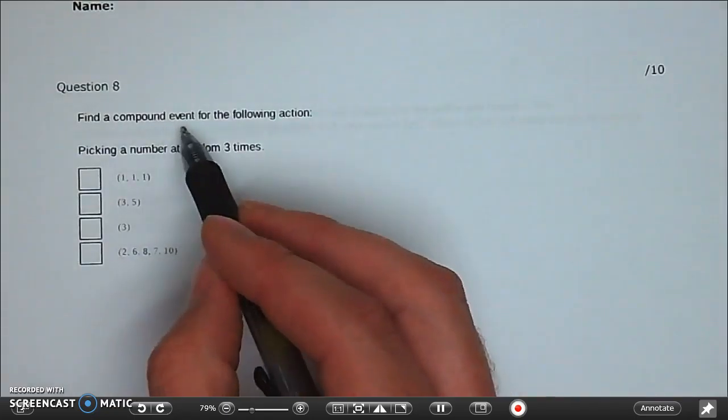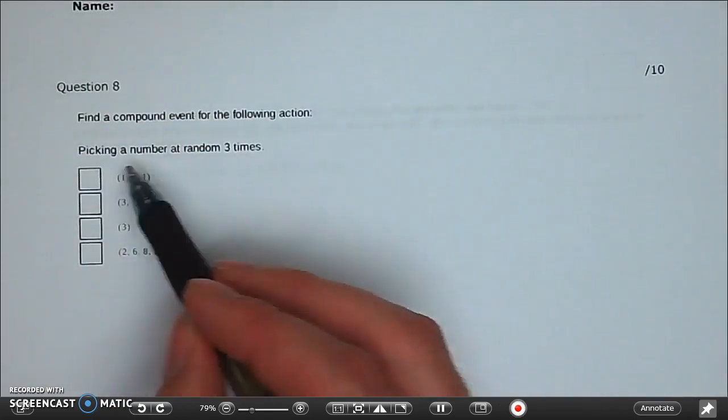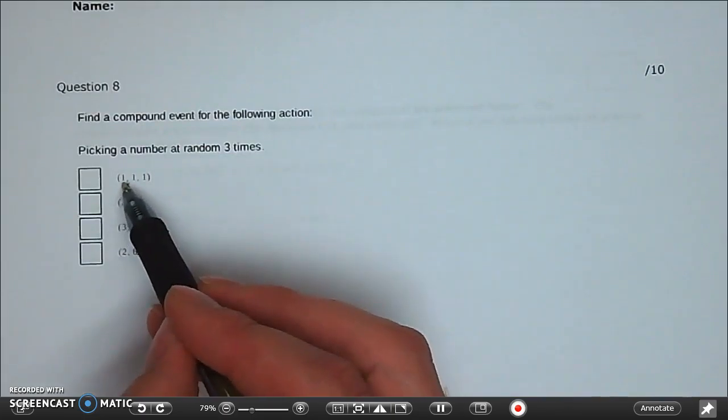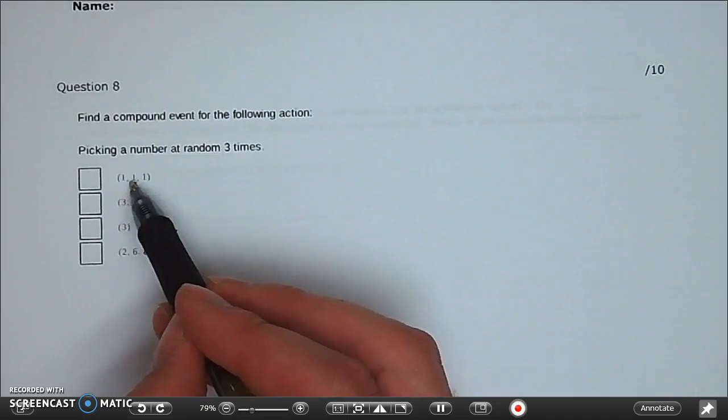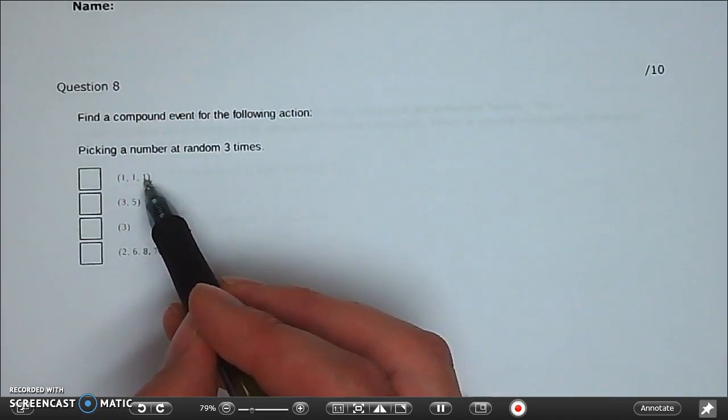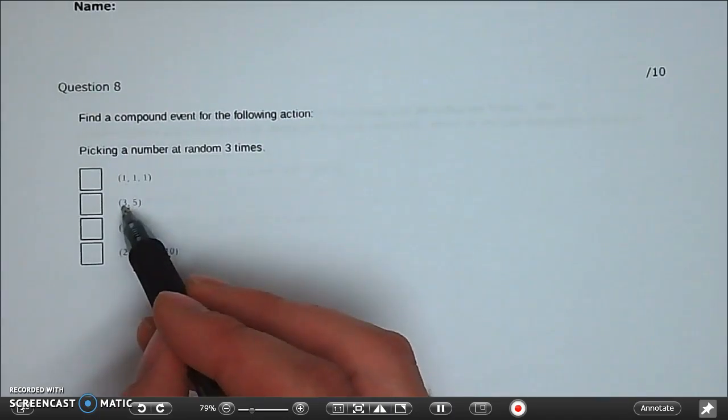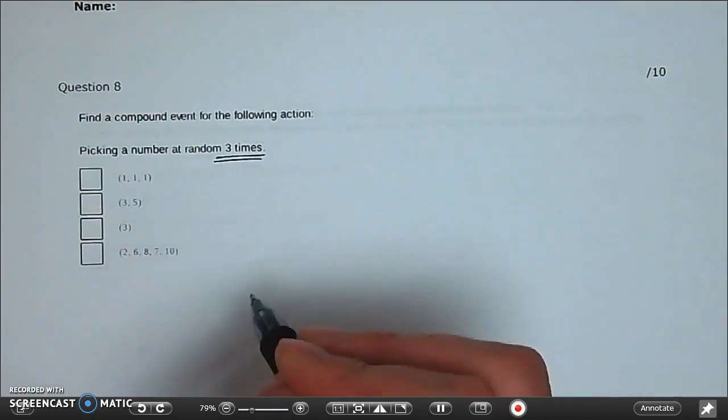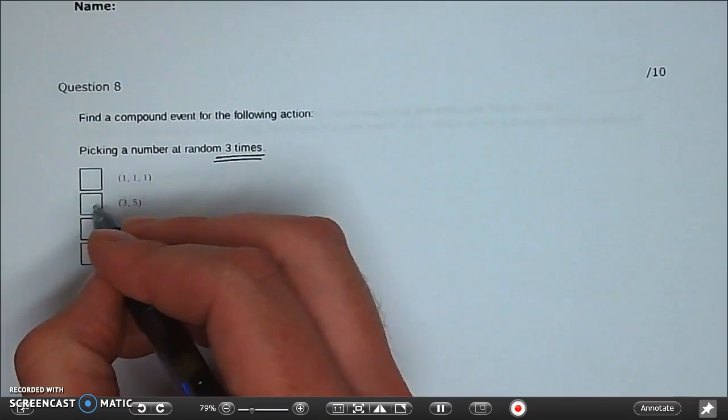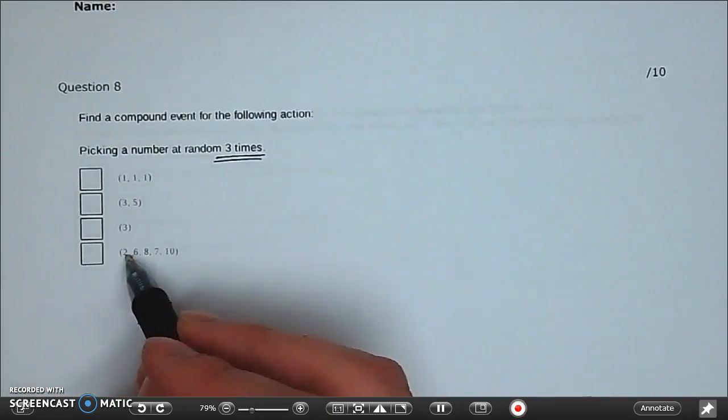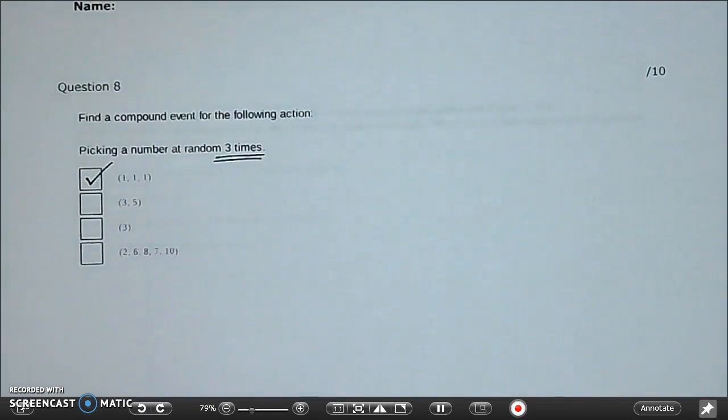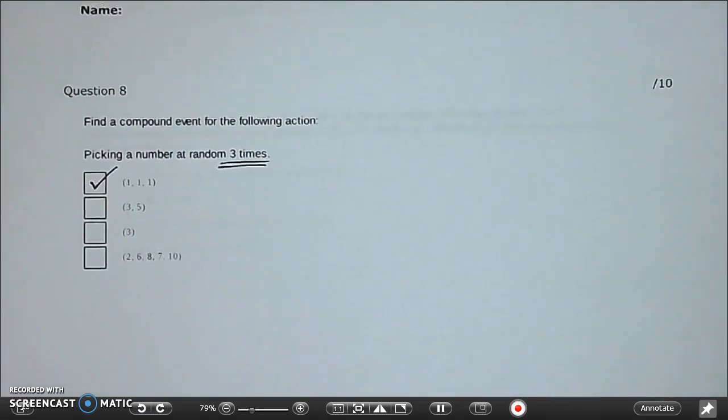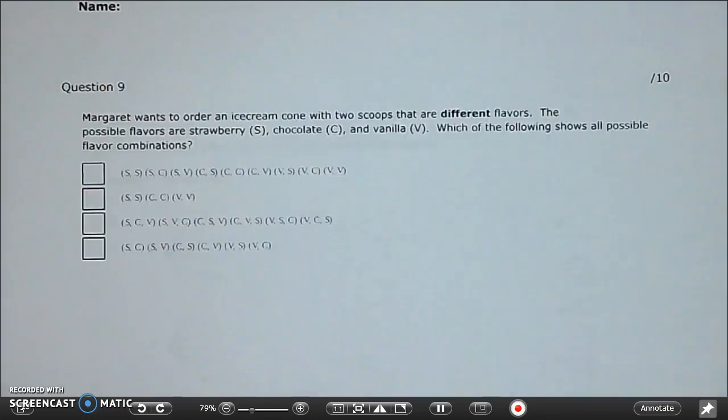Question eight. Find a compound event for the following action. Picking a number at random three times. This would mean we would pick a one and then a one and then a one. That could happen. This means we pick a three and then a five. But we have to choose something three times at random. So that's only two times. That doesn't work. This is only one time. This is choosing something five times. So this is obviously our best answer because there's three times that we're choosing a number at random for that action.